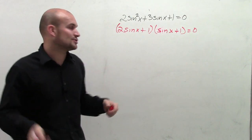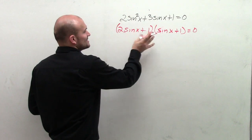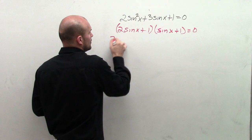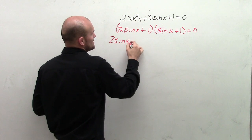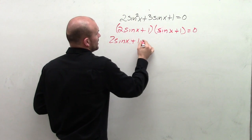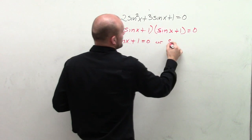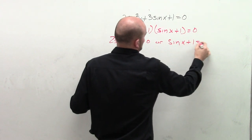Now the reason why we like factoring is to apply the zero product property. So now we can say, since this times this equals 0, that means that 2 sine of x plus 1 equals 0, or sine of x plus 1 equals 0.